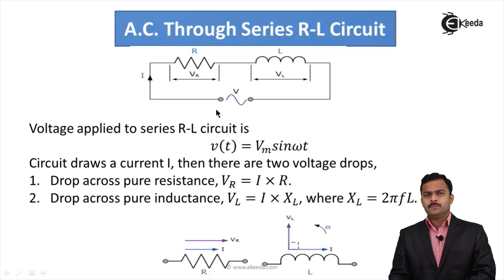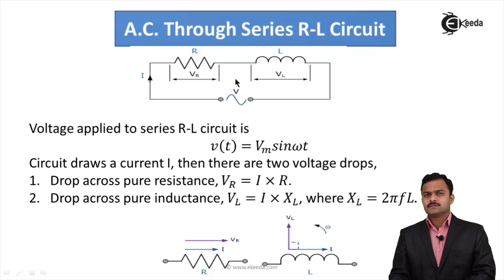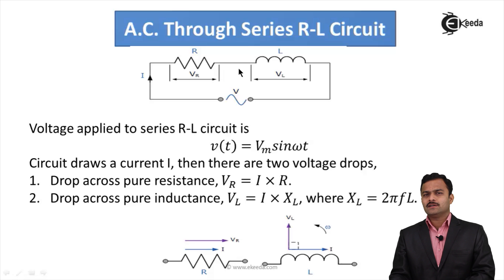Because of this voltage, current I will be drawn from the supply and will pass through the resistance and inductor — the same current passes through both since they are in series. Because of this current I, there will be two voltage drops: first, VR across the pure resistance given by I×R (Ohm's law), and VL across the pure inductor given by I×XL, where XL = 2πFL, also called inductive reactance.